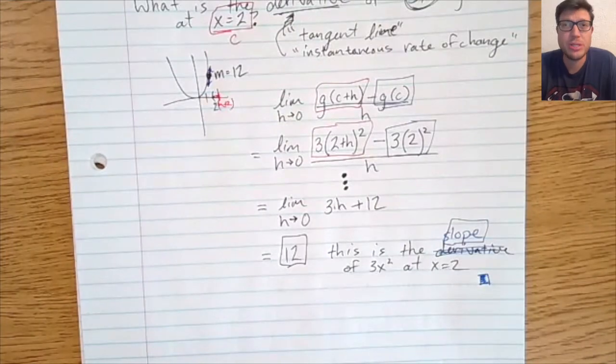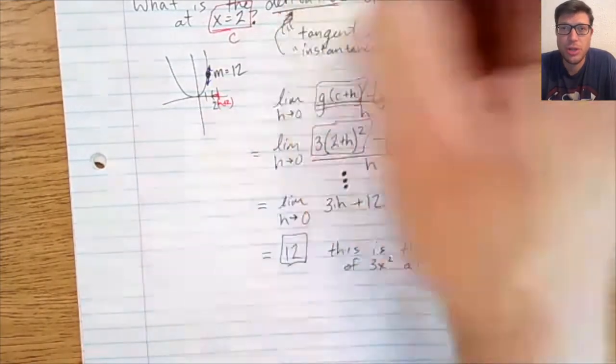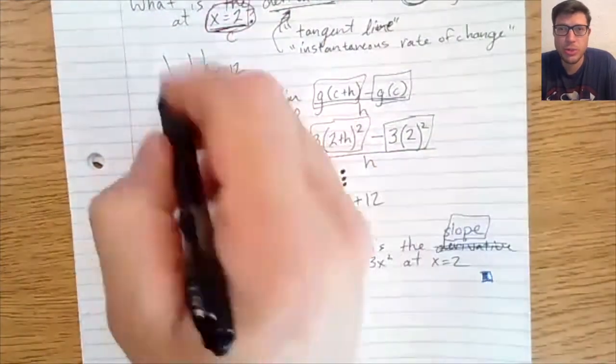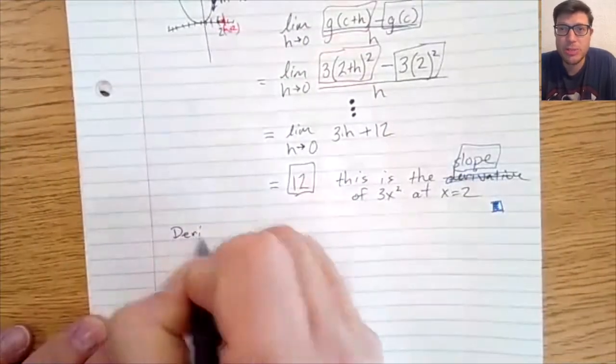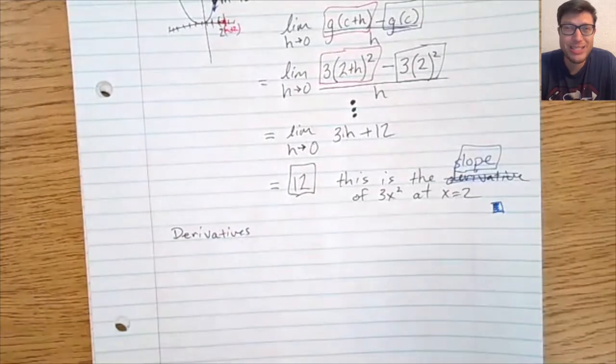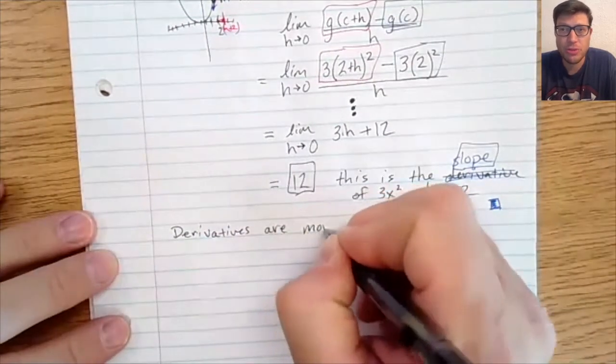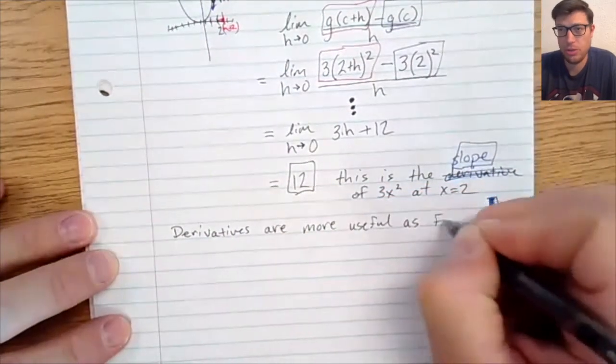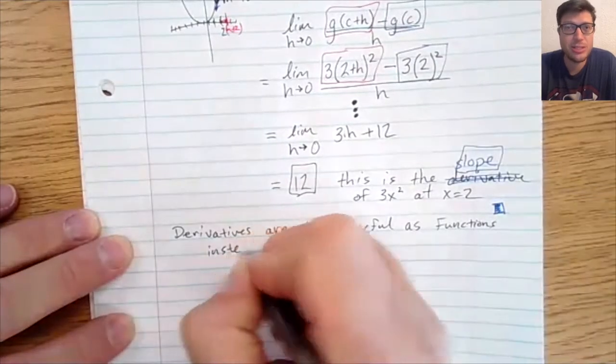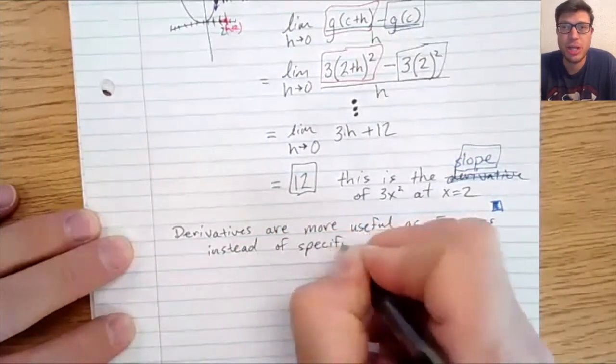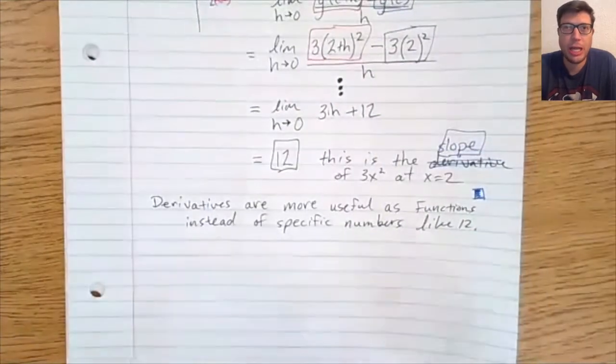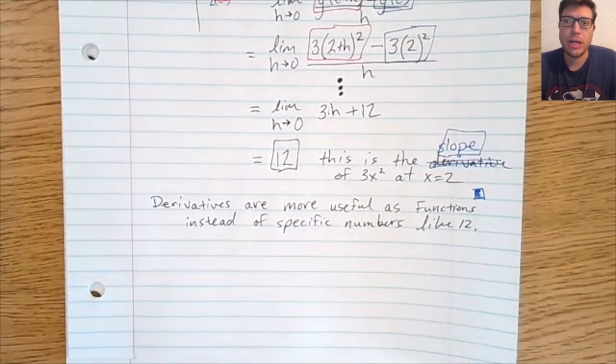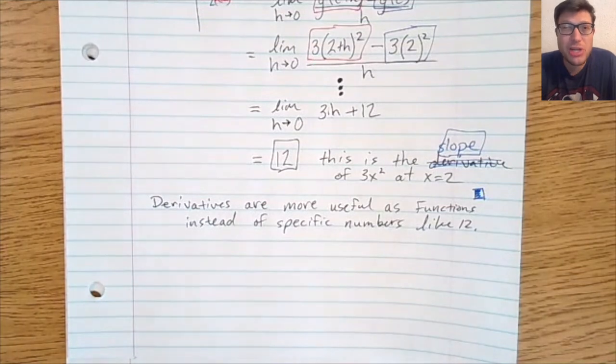What if we don't want to use a specific location like x equals two? Wouldn't it be better if we could have some sort of function that doesn't depend on a specific x? Derivatives really are more useful as functions instead of just specific locations or specific numbers defined at x equals two or x equals three or something else. We want to actually get to like a formula.